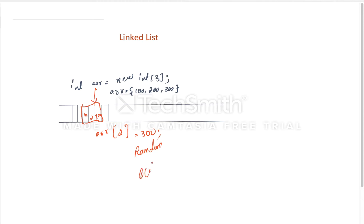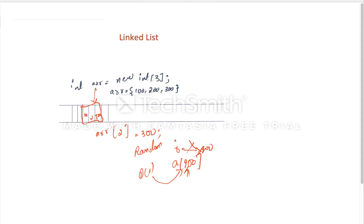Say array size is 1000. So A of 900 - even the 900th location element is directly fetched. We don't need to traverse from index 0 to 900 - no traversal needed, directly access the 900th position. So the time complexity is O(1). This is the array concept.